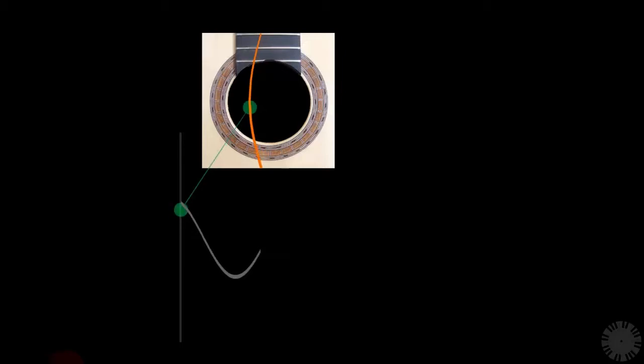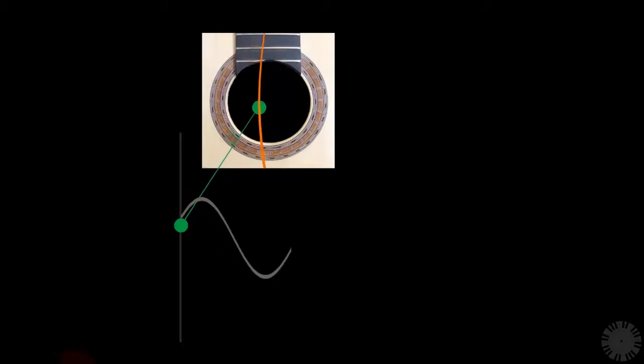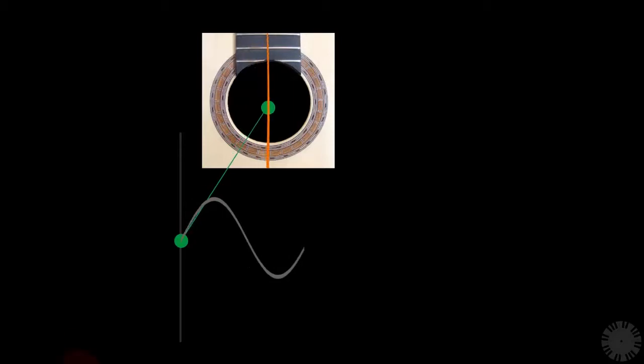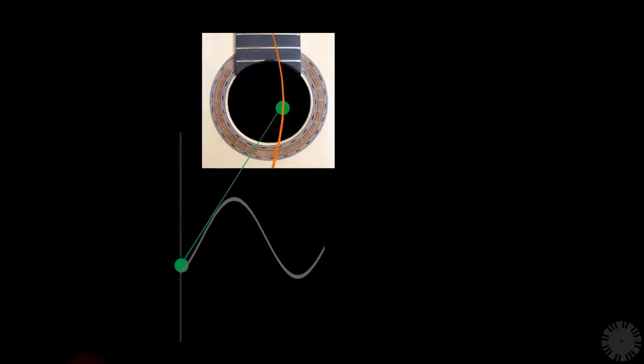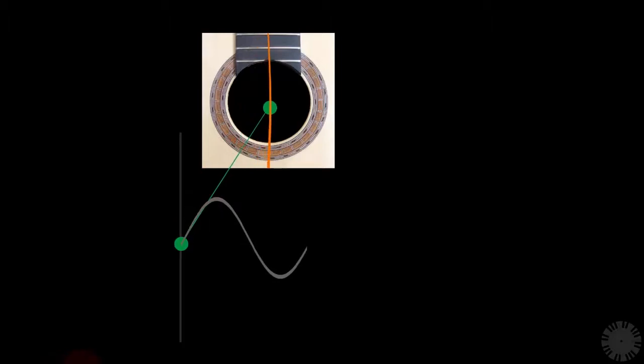It just passes through the equilibrium and moves to the opposite direction — all the way to as far as its energy allows, and then comes back to the equilibrium point. This whole round trip of the vibration from one extreme through the equilibrium to the other extreme and back is called one cycle.